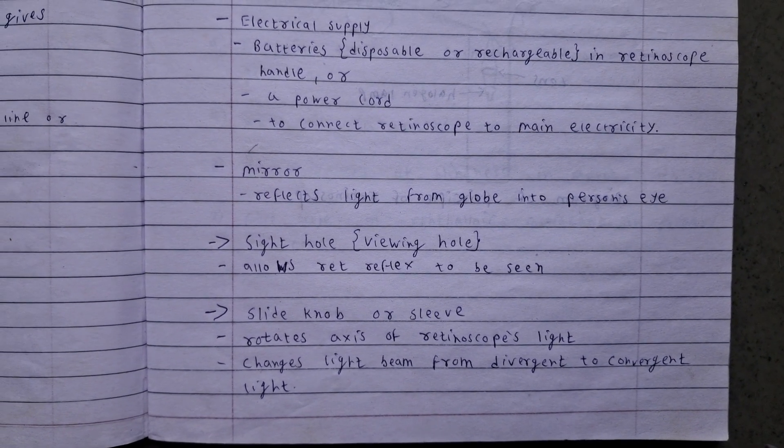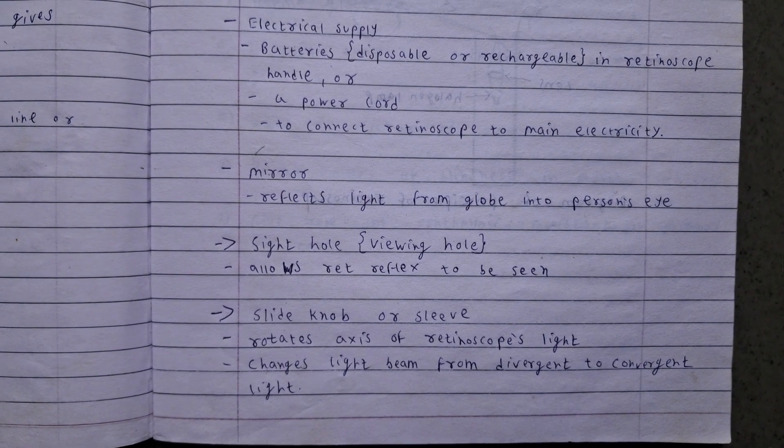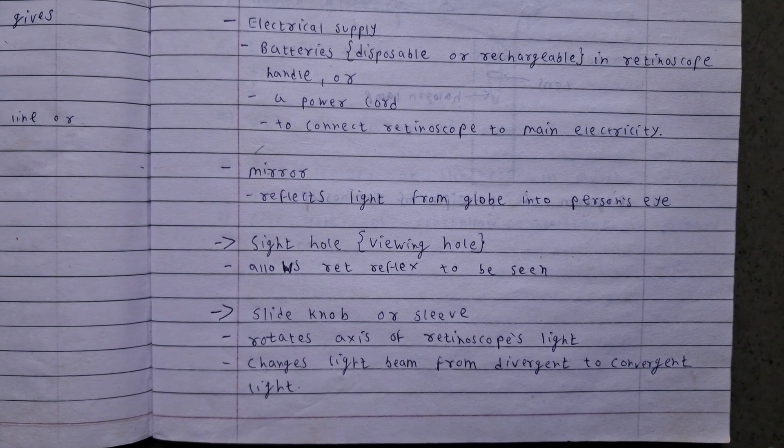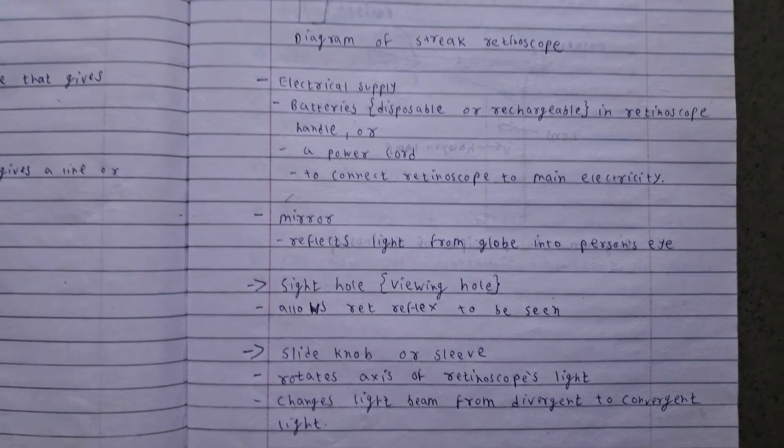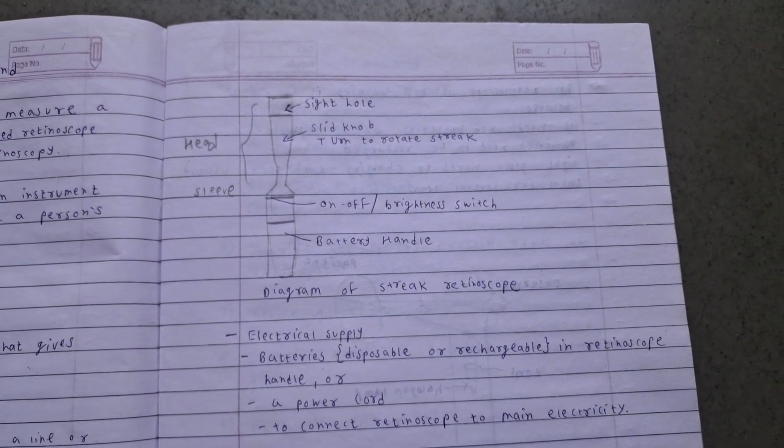Slide knob sleeve rotates axis of retinoscope's light, changes light beam from divergent to convergent light. This is diagram of streak retinoscope.